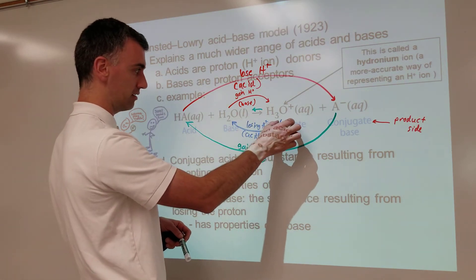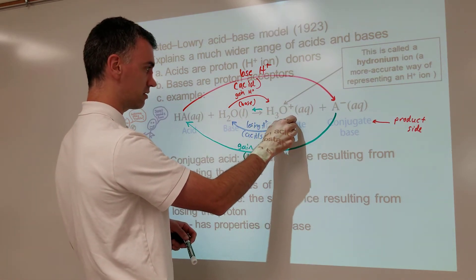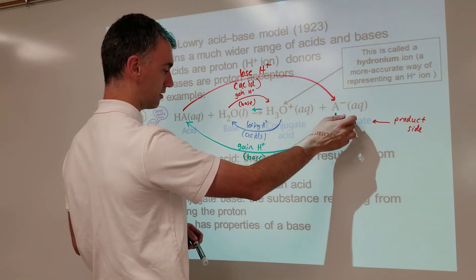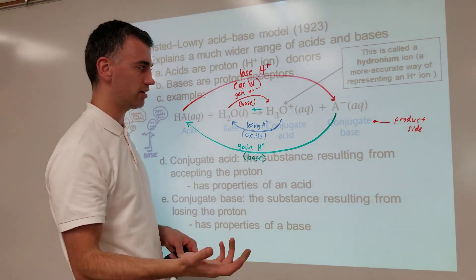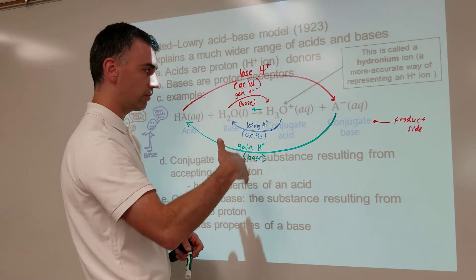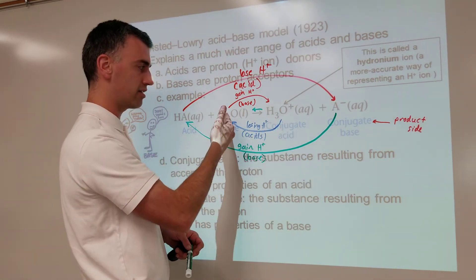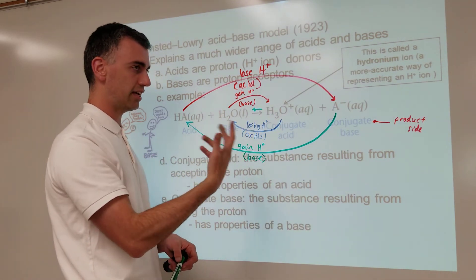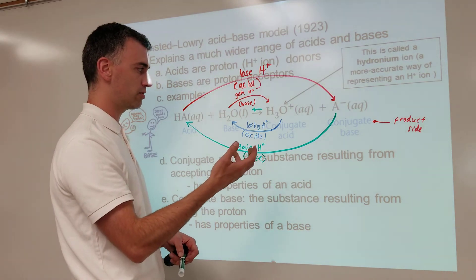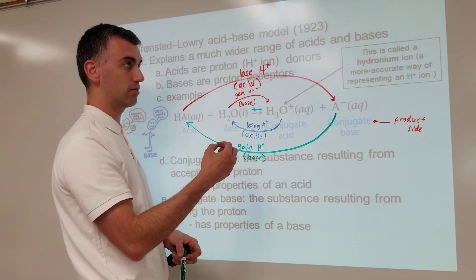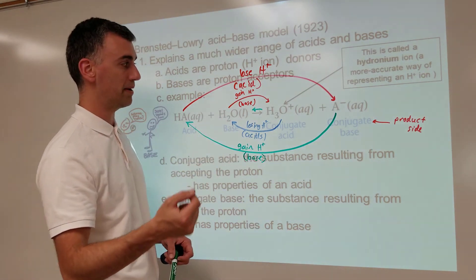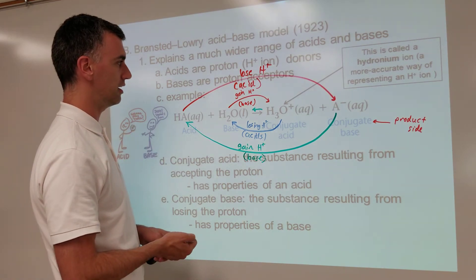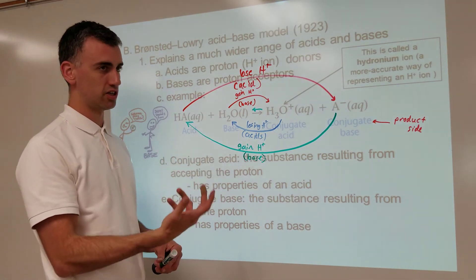It's just we add conjugate to the word acid for something that's in the products, or conjugate to base because it's in the products. But really, when it goes to whatever form it is on the other side of the equation, whether it gains or loses the hydrogen, that determines whether we call it an acid or a base. So that would be the justification.